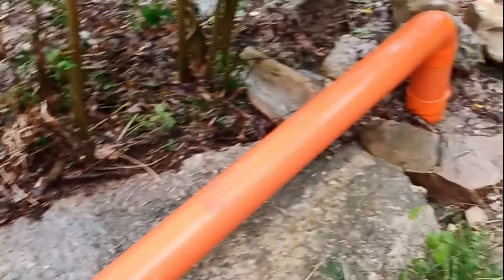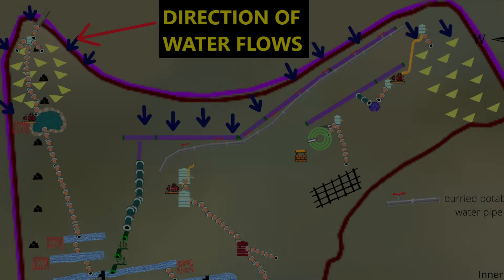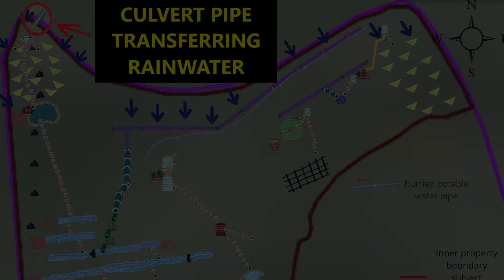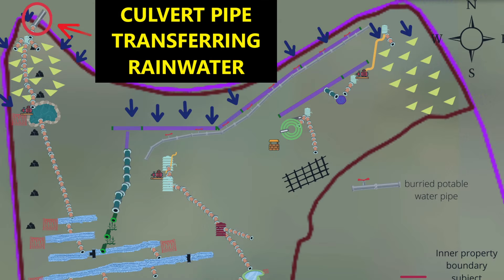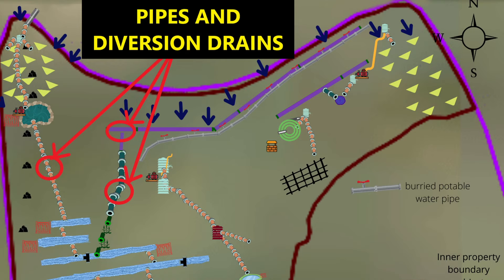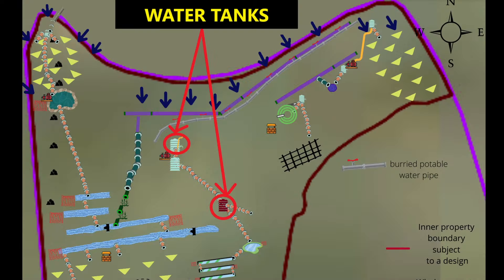Here's an example of water flows on our property and how we took advantage of that. The blue arrows represent the direction of water flows. The existing culvert pipe was transferring rainwater from the road to our land, causing erosion. Now the water travels to an irrigation pond without disturbing the soil. We use pipes and diversion drains to direct the water to earth storages such as swales and ponds, as well as rainwater tanks.